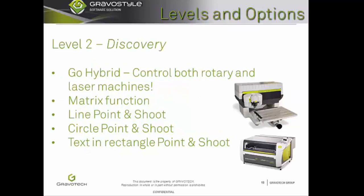The second level of Gravastyle is Discovery. Discovery level is great for small signage, funeral plates, rubber stamps, plates in a series run, a list of names, and more. Discovery gives you the ability to control both rotary and laser engraving machines. The Matrix function we discussed earlier. Line Point-and-Shoot allows the user to define a shape and its position directly on the machine — just like Plate Point-and-Shoot, although it can handle the shape of a more complex object. Circle Point-and-Shoot uses the same concept but can determine the diameter of your object simply by receiving information from your selected engraving points. Text in a Rectangle Point-and-Shoot is perfect for items like ID plates. The function allows you to locate multiple rectangles and accurately fill them with text — no guesswork, offset lettering, or wasted plates.